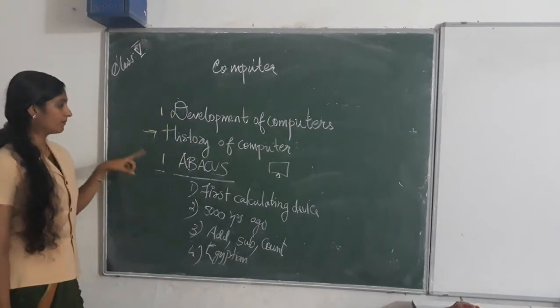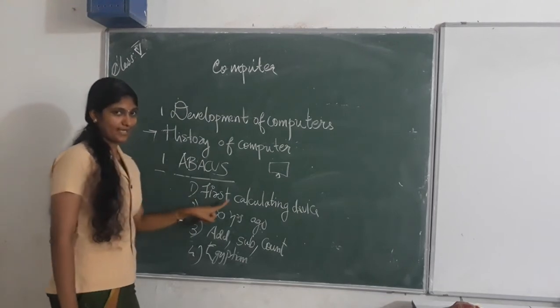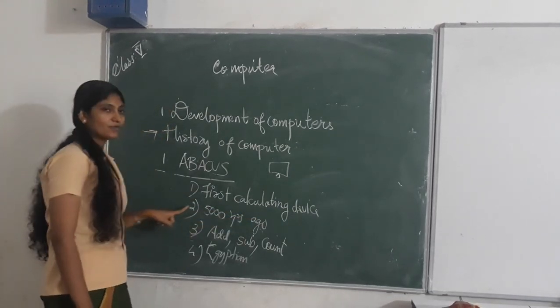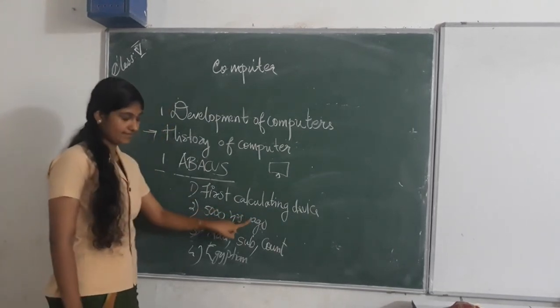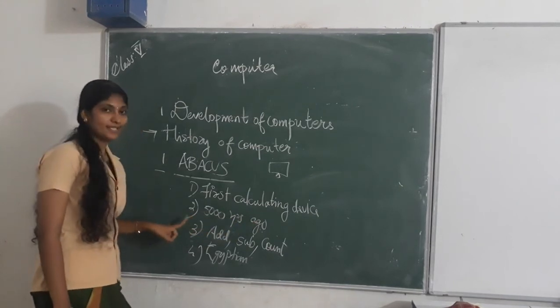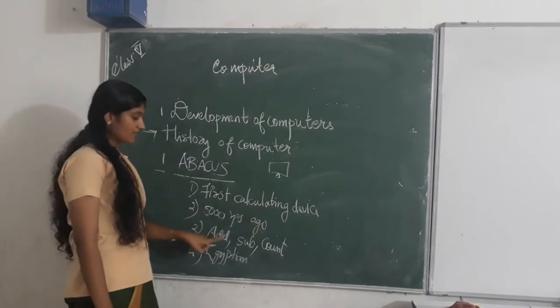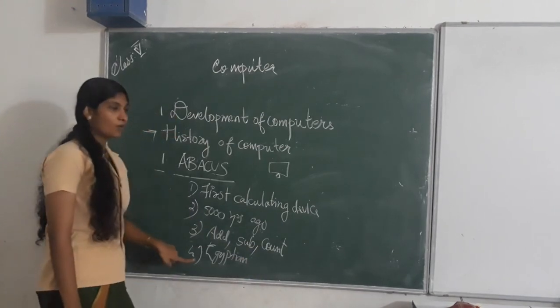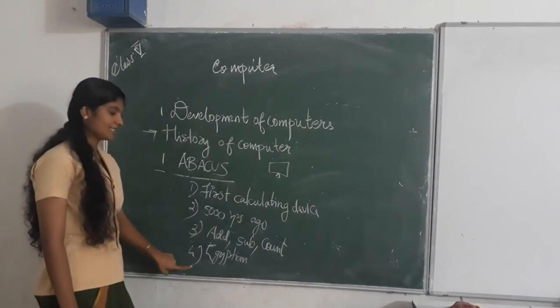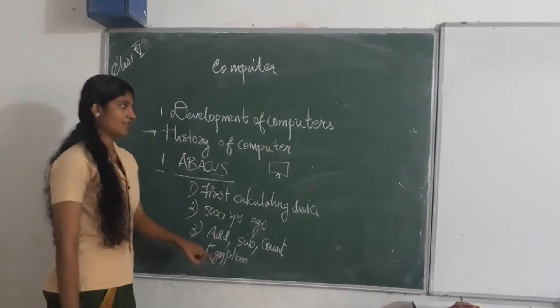What is first abacus? Abacus is the first calculating device. It is about 5,000 years ago. What is the use of abacus? Addition, subtraction, and count. Who invented abacus? It is invented by Egyptians.